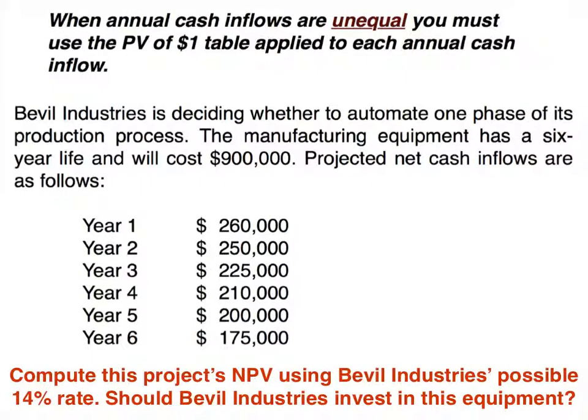What do we do when it's not an annuity — when the payments are not equal? In that case, we have to use the present value of lump sum table. We're always going to be focused on the present value tables; we just have to determine whether it's an annuity or lump sums.